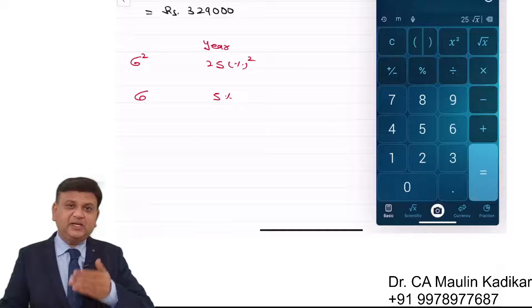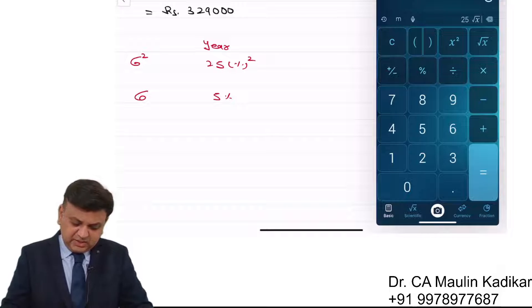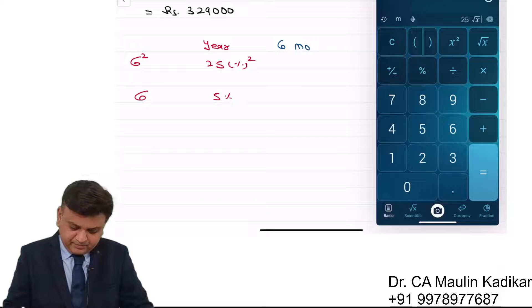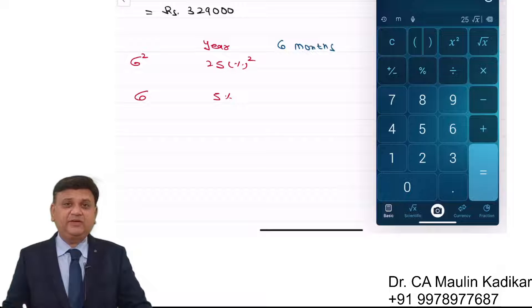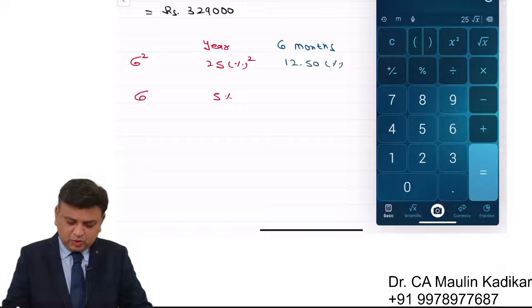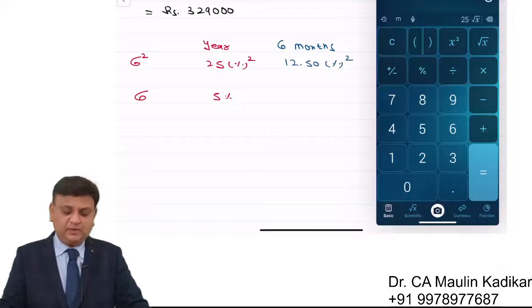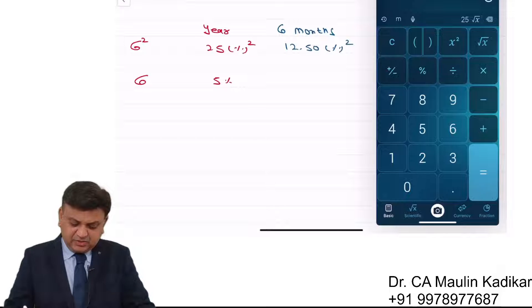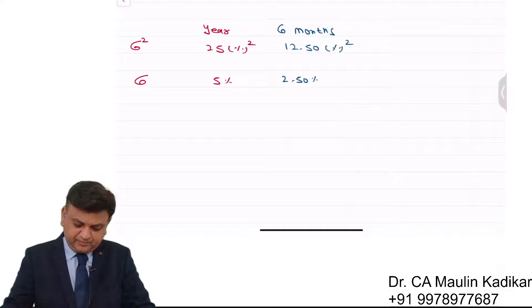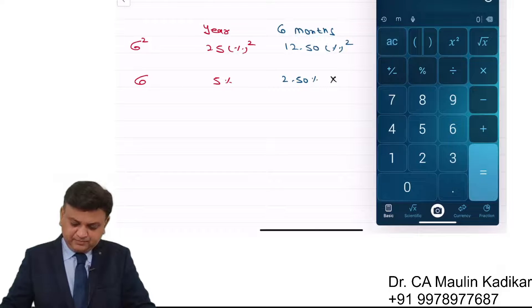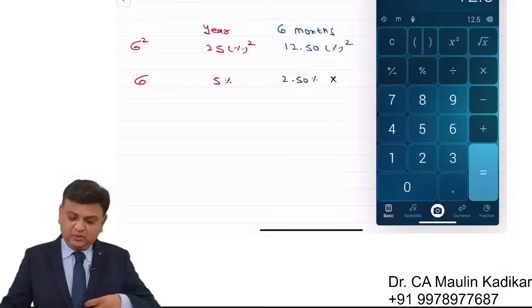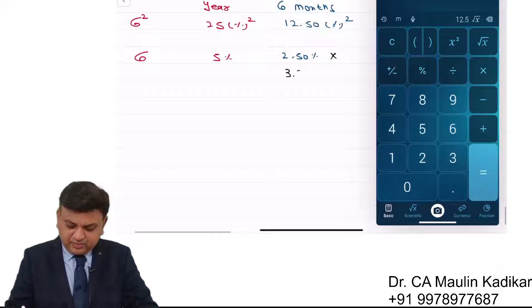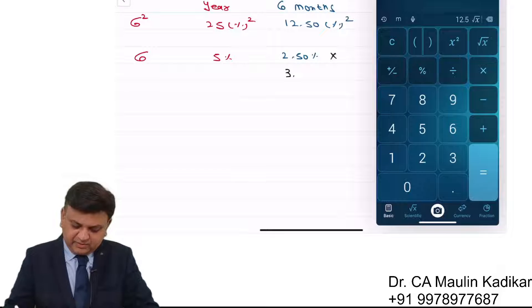Suppose that this is the yearly variance and standard deviation that we have for 6 months - we need to find the variance and standard deviation. So 6 months variance is 12.5%, calculated as 25 divided by 2. But 6 months standard deviation is not 2.5% - that would be wrong. It is the square root of 12.5%, which is 3.5355%.